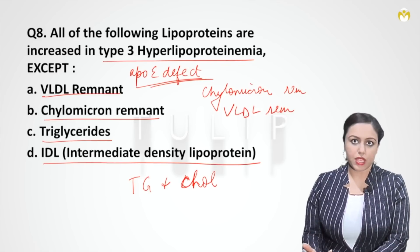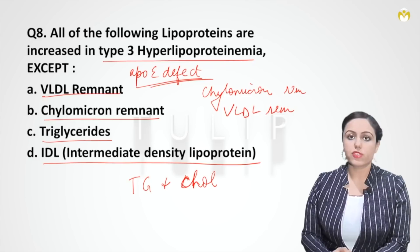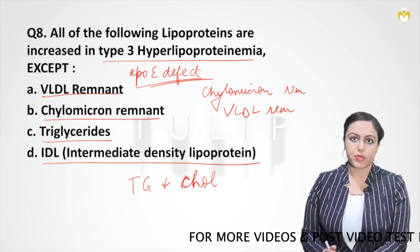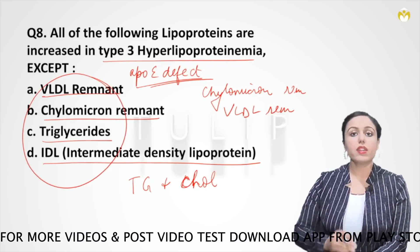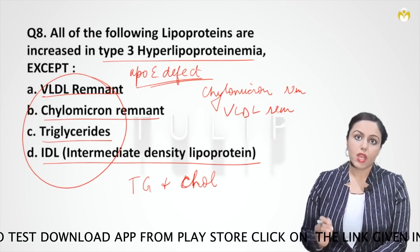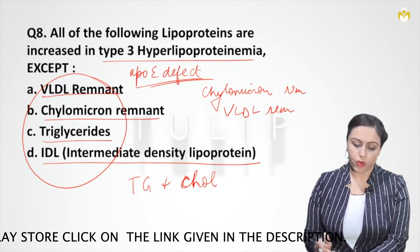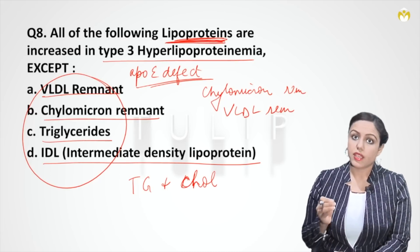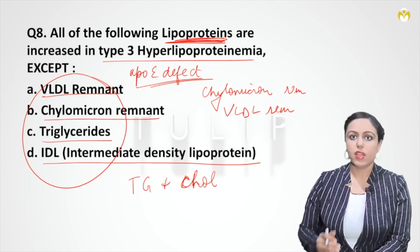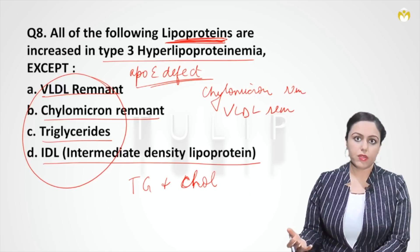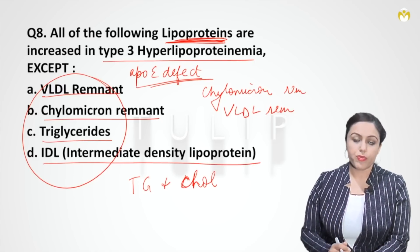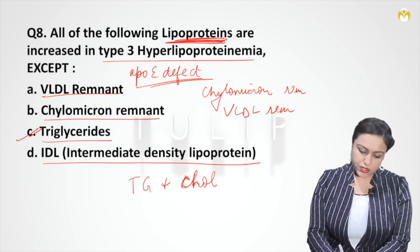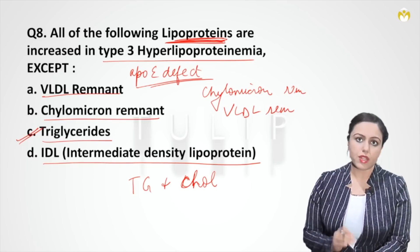The question asks which lipoprotein is increased in type 3 hyperlipoproteinemia — except. The key distinction is between lipids and lipoproteins: lipoproteins include HDL, LDL, VLDL, while lipids include triglycerides and cholesterol. The question specifically asks about lipoproteins, not lipids. Triglycerides and cholesterol are lipids, not lipoproteins. Therefore the answer is C — triglycerides are not a lipoprotein.